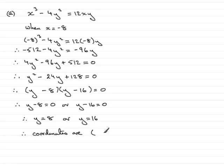We have a pair of them: (-8, 8) when x = -8, y = 8, and (-8, 16) when x = -8, y = 16. So there are our coordinates when x = -8, and that brings us to the end of part A.